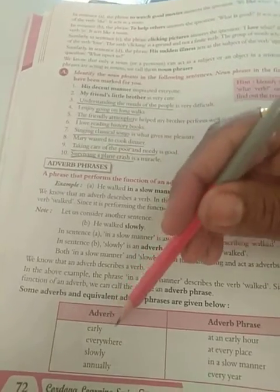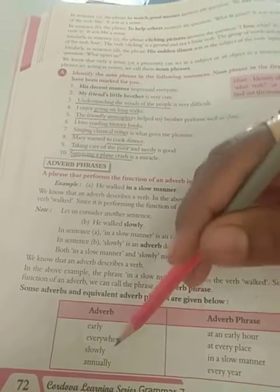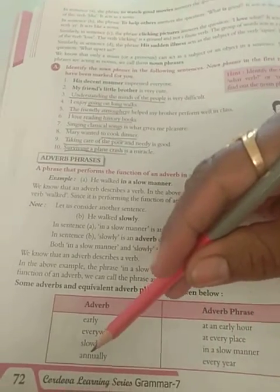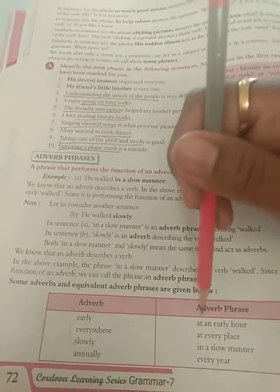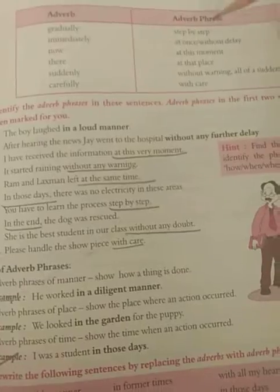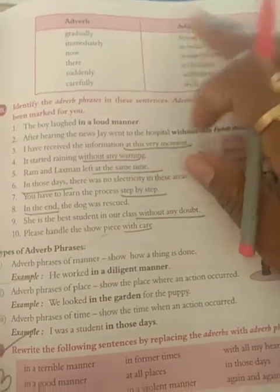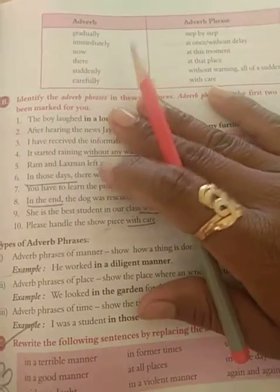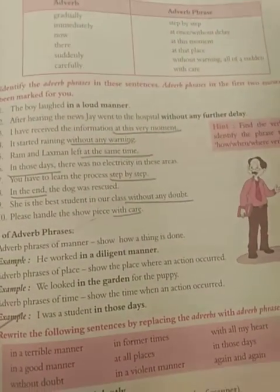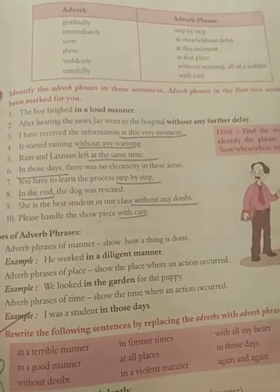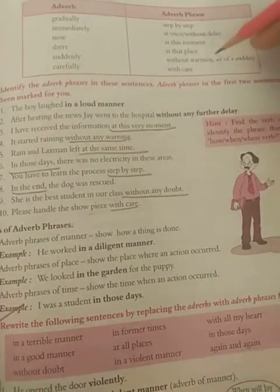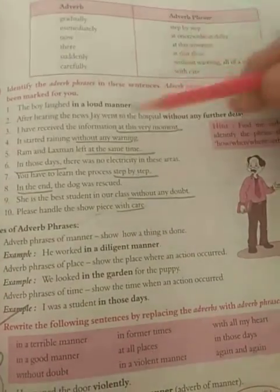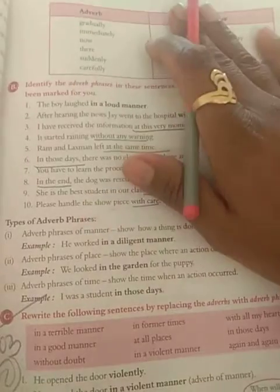Here are some examples of adverbs and their equivalent adverb phrases: 'early' becomes 'at an early hour'; 'everywhere' becomes 'at all places'; 'slowly' becomes 'in a slow manner'; 'annually' means 'every year'; 'gradually' means 'step by step'; 'immediately' becomes 'at once' or 'without delay'; 'now' becomes 'at this moment'; 'there' becomes 'at that place'; 'suddenly' becomes 'without warning' or 'all of a sudden'; 'carefully' becomes 'with care'.